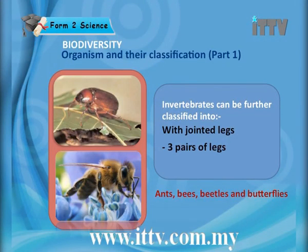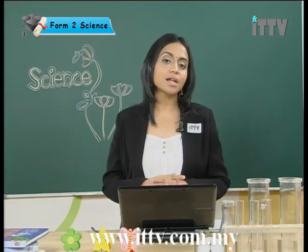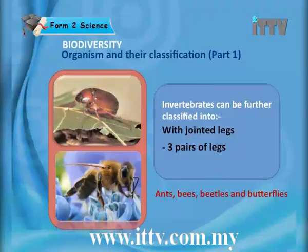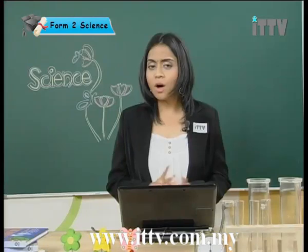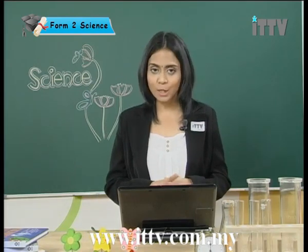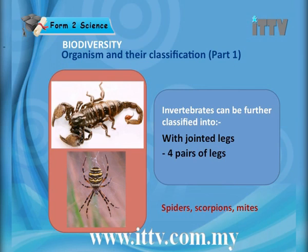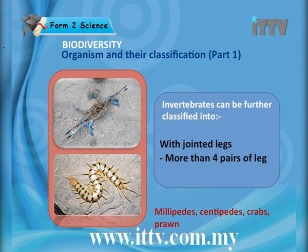Invertebrates can be further classified into those with jointed legs and those without. Animals with three pairs of jointed legs include ants, bees, beetles and butterflies. Animals with four pairs of jointed legs include spiders, scorpions and mites. Animals with more than four pairs of jointed legs include millipedes, centipedes, crabs and prawns.